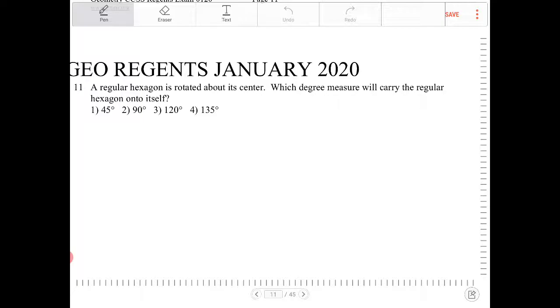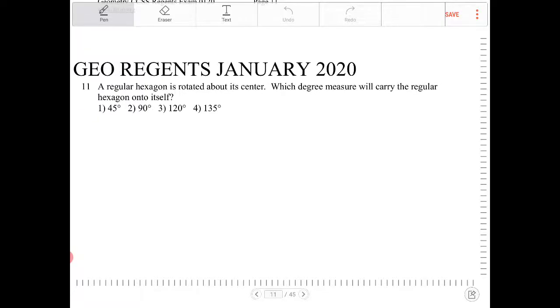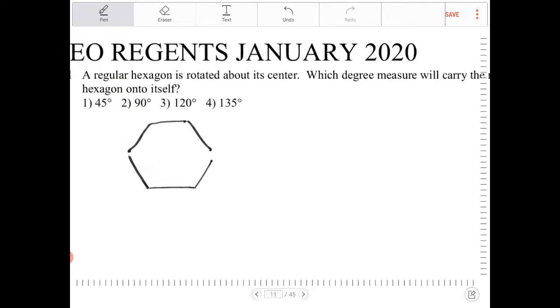To answer this question, we have to understand what exactly is a regular hexagon. A regular hexagon is a six-sided shape where all the side lengths are equal and all the interior angles are the same.